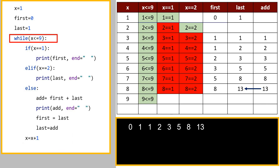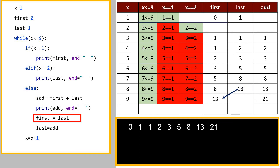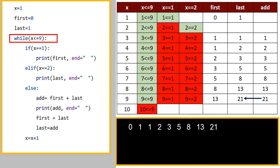x becomes 9. 9 is less than or equal to 9 — yes, true. The body of the loop executes again. 9 equal equal to 1 — no. 9 equal equal to 2 — no. Add gets value 8 plus 13, which gives 21, and 21 is displayed on the output screen. First gets 13 and last gets 21. Value of x becomes 10. 10 is less than or equal to 9 — this condition is false, so the loop body is terminated and execution moves to the next statement after the while loop.